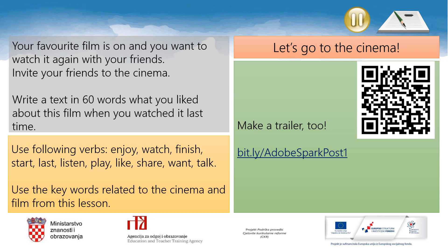And now a task to do. Your favorite film is on and you want to watch it again with your friends. Invite your friends to the cinema. Then write a text in 60 words about what you liked about this film when you watched it last time. Use the following verbs: enjoy, watch, finish, start, last, listen, play, like, share, want, talk. Use the key words related to the cinema and film from this lesson. You can also make a trailer using the digital app at this link: bit.ly Adobe Spark Post, or scan this QR code. When you finish your work, share it with your teacher. And don't forget — have fun!